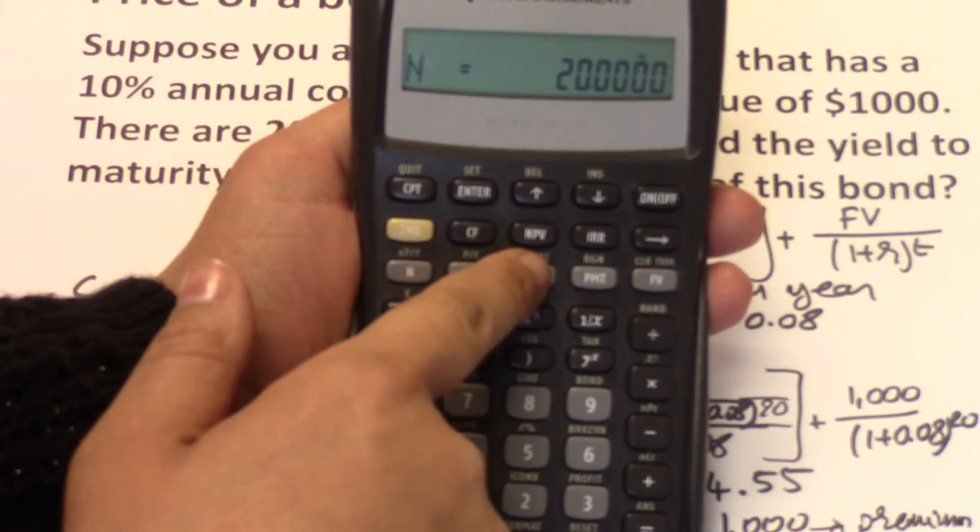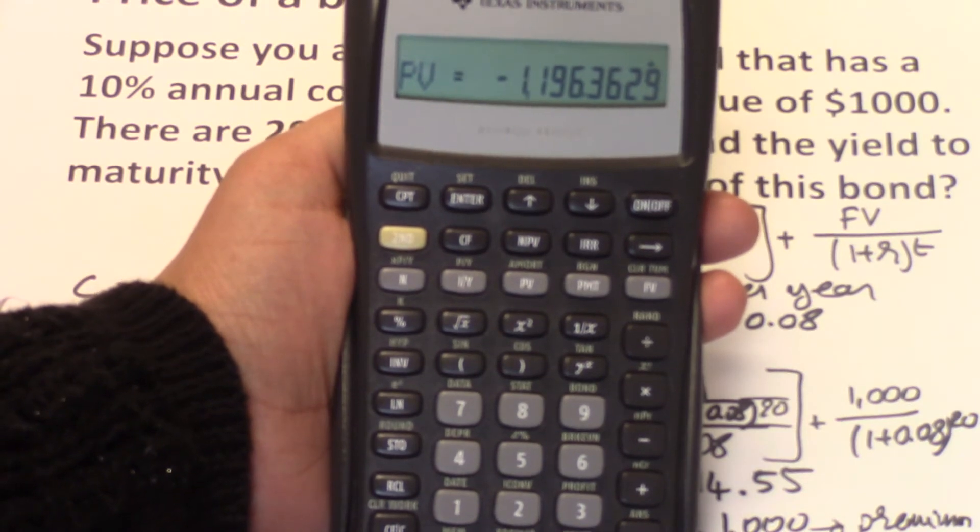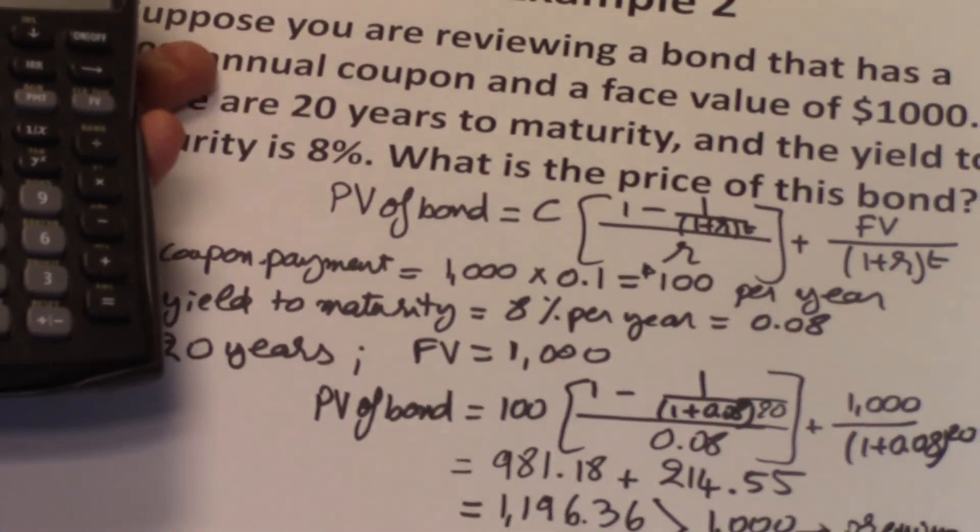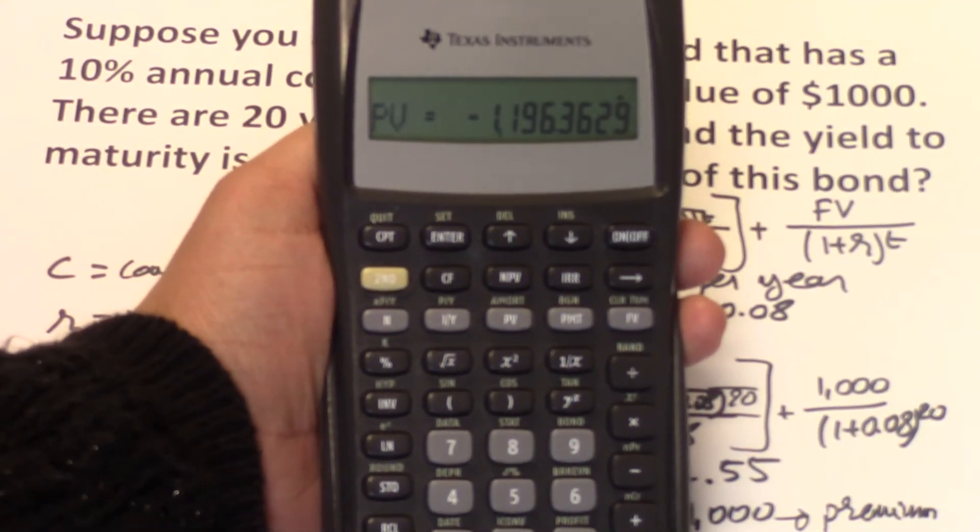Now you just compute PV. And you get a price of $1,196.36, which is similar to what we have previously found. And so you see it as a negative number.